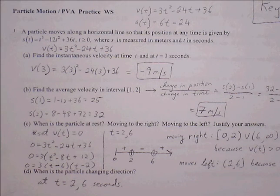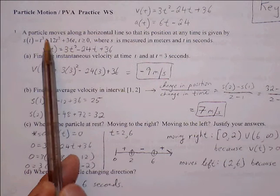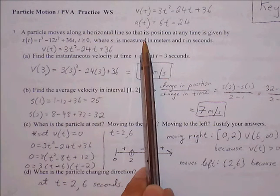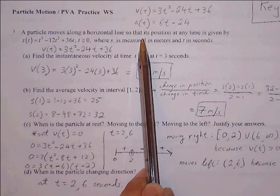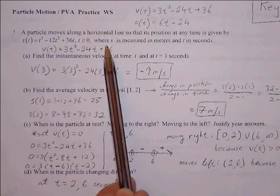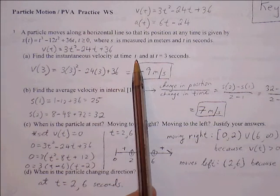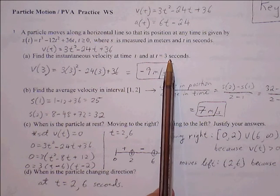This is the Particle Motion PVA Practice Worksheet. Number 1: a particle moves along a horizontal line so that the position at any time is given by s of t. Find the instantaneous velocity at time t and at 3 seconds.